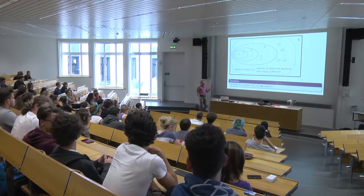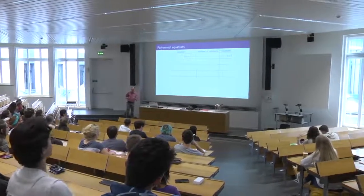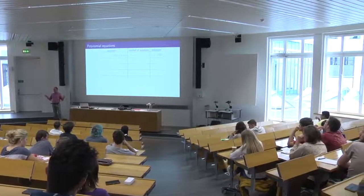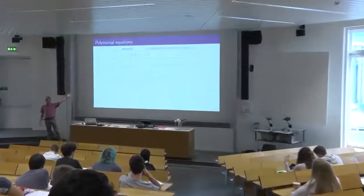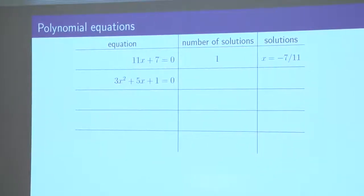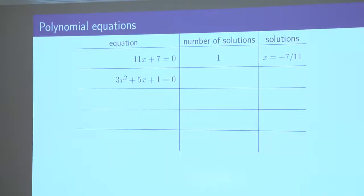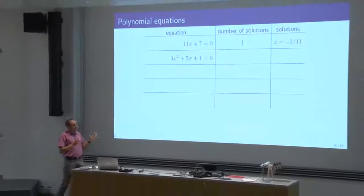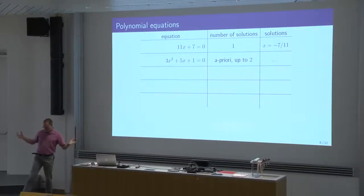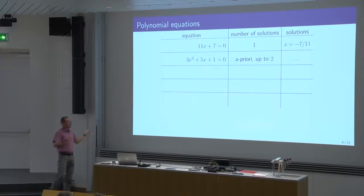Before we continue, let me review some background on polynomial equations. A linear polynomial equation has one solution. A quadratic equation — degree 2 — has up to two solutions, by the quadratic formula. If I give you a cubic equation of degree three, with constant coefficient, coefficient of x, coefficient of x squared, and x cubed — what can you say about the number of solutions? Up to three solutions.